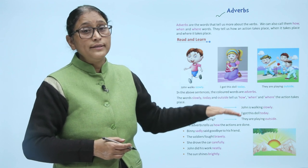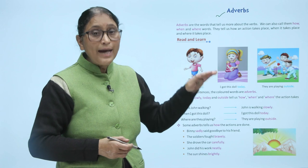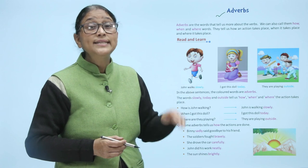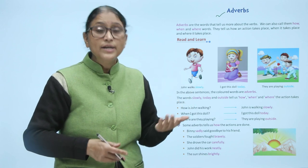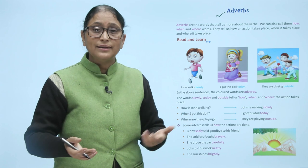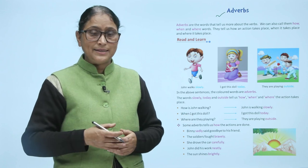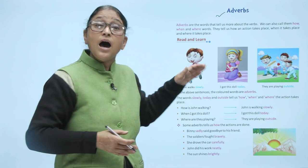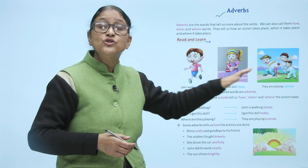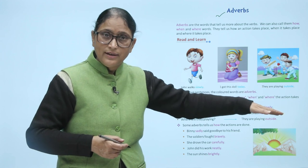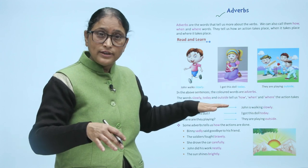The words slowly, today and outside tell us how, when and where the action takes place. How is John walking? John is walking slowly. John kaisi walk kar rahe hai? Slowly.